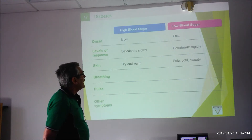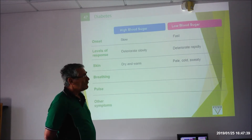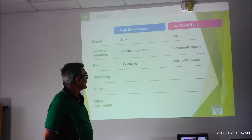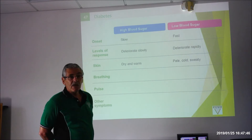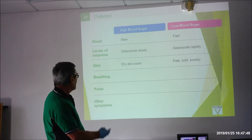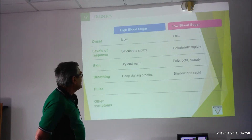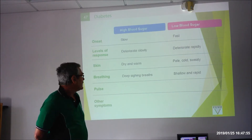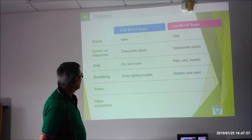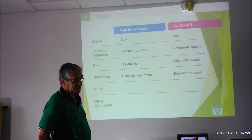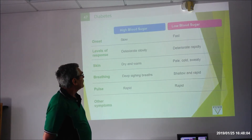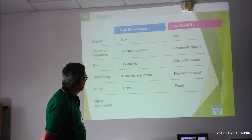The hypoglycemic patient who is going to go unconscious if not treated will have pale, cold, sweaty skin, while the hyperglycemic patient will have dry and warm skin. Breathing in the hypoglycemic patient will be shallow and rapid, while breathing in the hyperglycemic patient will be deep sighing breaths. The pulse will be rapid in the hypoglycemic patient.